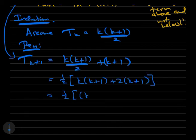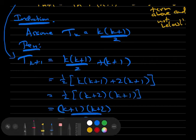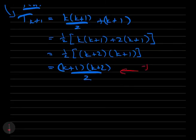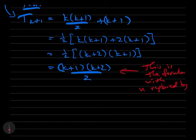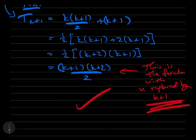Then tk plus 1 is tk plus k plus 1 from the formula we established earlier, which by the induction hypothesis is k times k plus 1 over 2 plus k plus 1. Now we put this over a common denominator. Multiply the k plus 1 term by 2 over 2, do a little bit of factorization, and we get that this is k plus 2 times k plus 1 over 2, which is exactly the formula we're trying to prove when n is replaced by k plus 1, and we are done. We've established this formula.